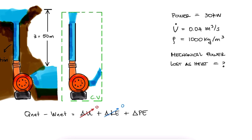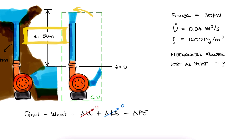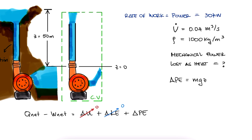As for the change in potential energy, we have water coming in from the lake, which can be our datum, and water leaving 50 meters higher. We know that the energy change is mgz, but since we were given the power of the pump and we're being asked to find the power lost as heat to friction, what we're looking at here is the change in energy per unit time.